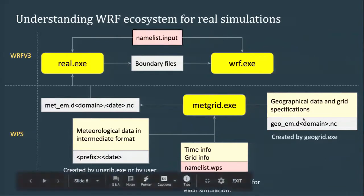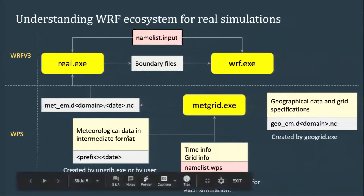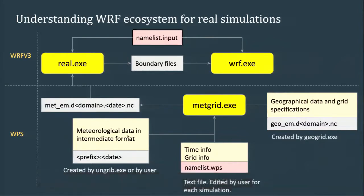In addition to the namelist, metgrid needs geographical data — things like a land mask, topography, land surface types — things that don't change. It needs the grid specifications that you provide. It also needs meteorological data for creating the boundary conditions, which can come from whatever source you want.